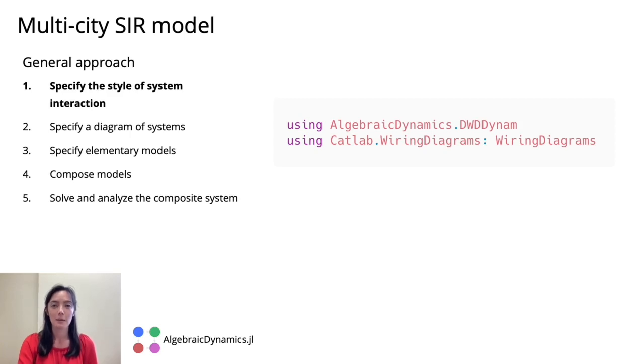In this example, we're going to use the directed style of system interaction to model the directed flow of people between cities.